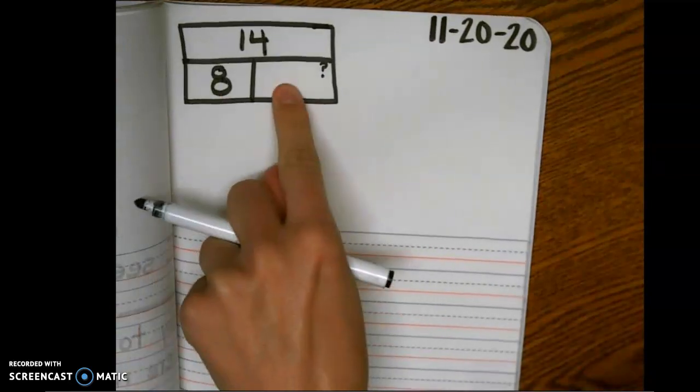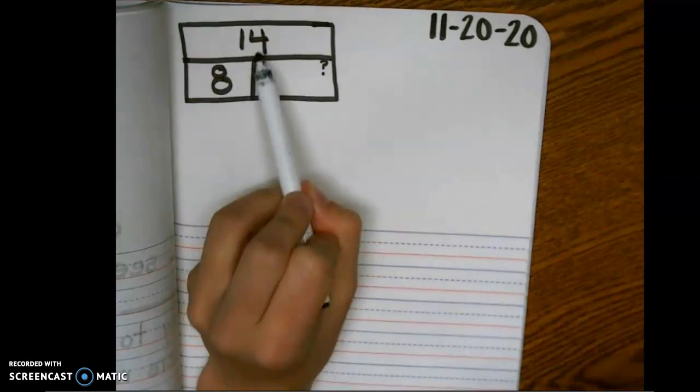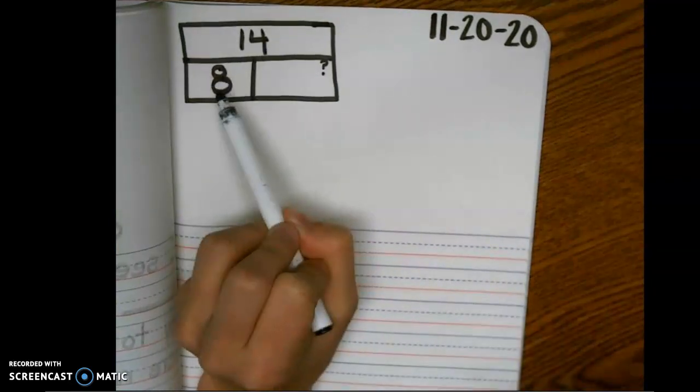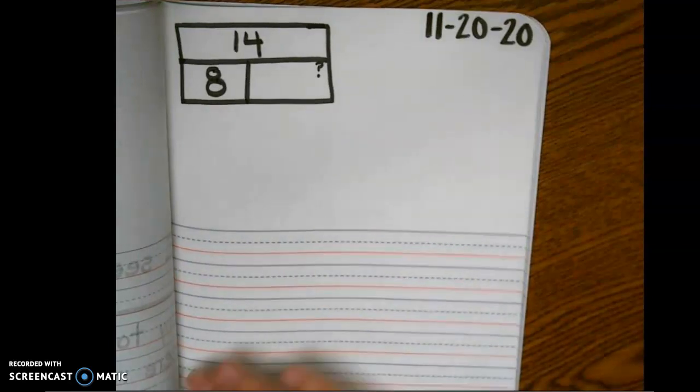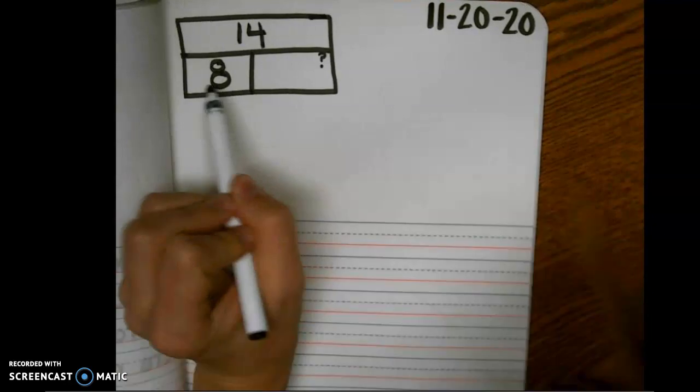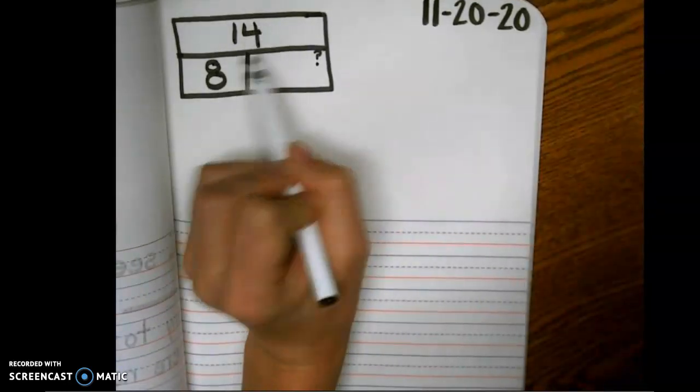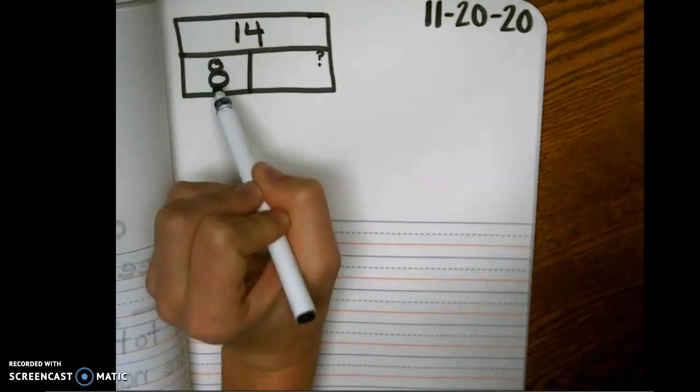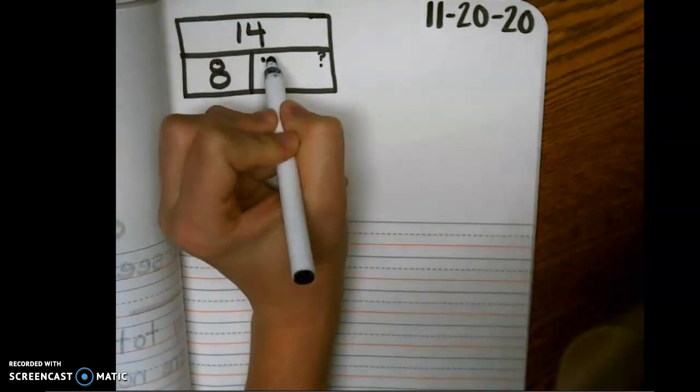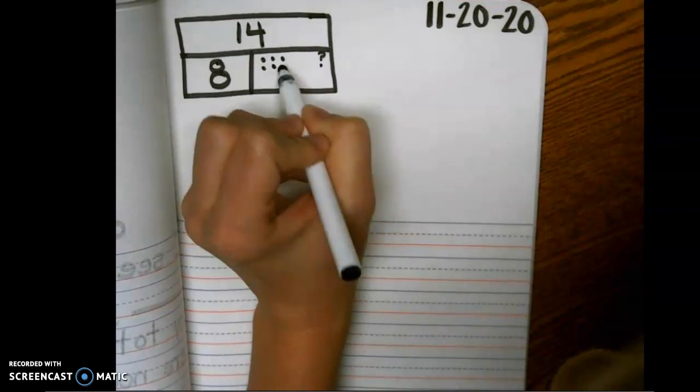You can count up with dots to see how many more you need to get to 14, or you can take 14 minus 8 and see what's left. The strategy I want to use is to count up. So if we know that one of our parts is 8, let's count up with dots in this area until we get to 14. So we have 8, 9, 10, 11, 12, 13, 14.